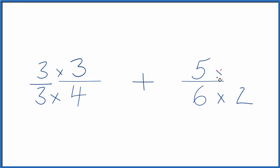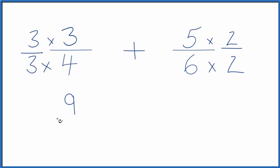And over here, I need to multiply by 2 over 2. So now, 3 times 3, that's 9, and 3 times 4, that's 12. And 9 over 12, that's the same as 3 over 4. They're equivalent fractions.